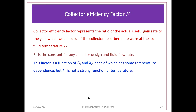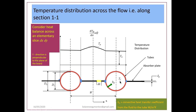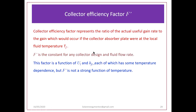The collector efficiency factor F' represents the ratio of the actual useful heat gain rate to the gain which would occur if the collector absorber plate were at the local fluid temperature. Since the plate temperature is higher than the fluid temperature, losses increase with this temperature difference. If these two temperatures were equal, losses would be minimum and the useful heat gain rate would be maximum. F' tells us about the effectiveness with which heat is being transferred to the fluid, and it is a constant for any given collector design as it involves tube spacing and tube diameters.